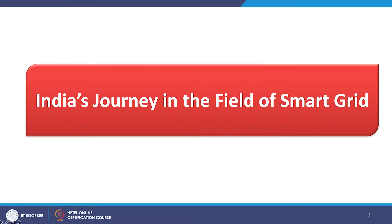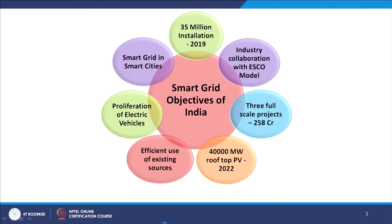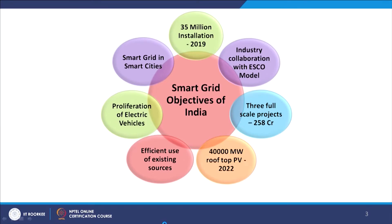India's journey in the field of Smart Grid is quite significant. Smart Grid objectives of India highlight many goals and desired milestones: 35 million smart meters installation by 2019, which is a huge target. Industry collaboration with the ESCO model is a very new initiative where energy efficiency schemes are adopted by distribution utilities. Three full-scale smart grid projects have been executed spending 258 crores, and 40,000 megawatt rooftop PV is expected by 2022.